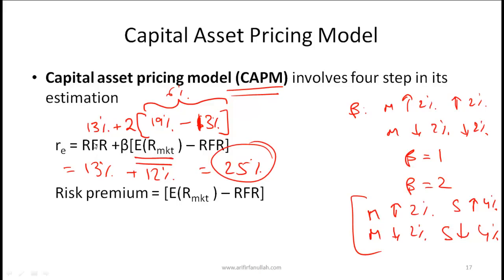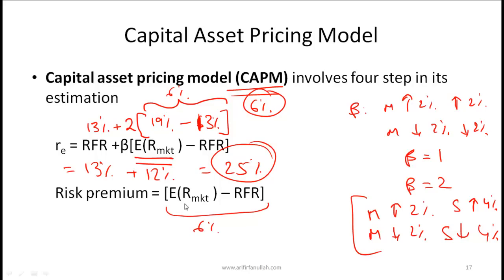This high required return reflects the high risk-free rate and relatively high market risk premium. The market risk premium of 6% represents the additional return equity investors demand for taking the risk of investing in the stock market over risk-free government bonds. In exam questions you may be given either the expected market return and risk-free rate, or simply the risk premium directly — read the wording carefully.